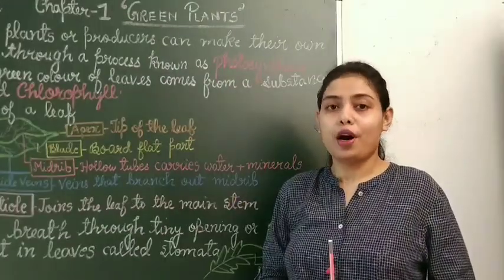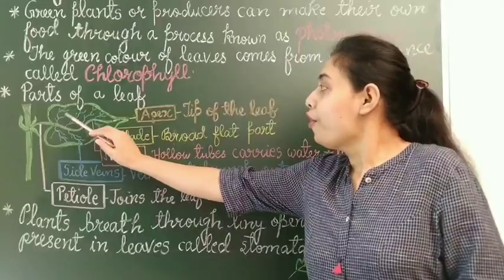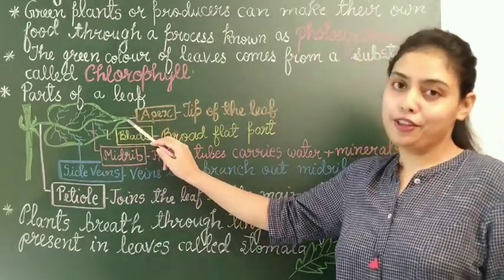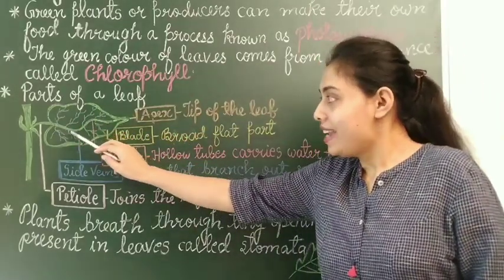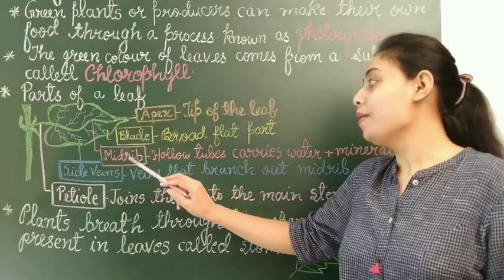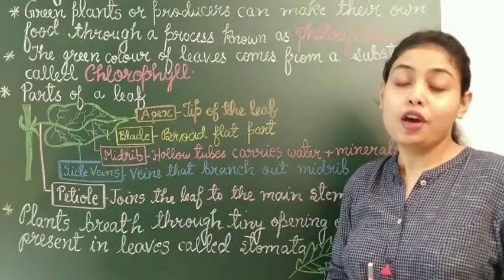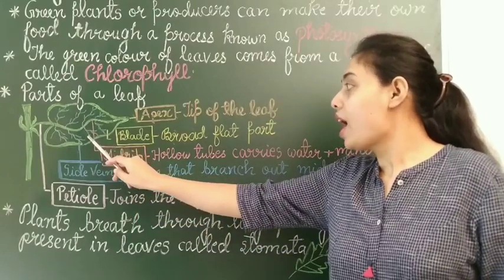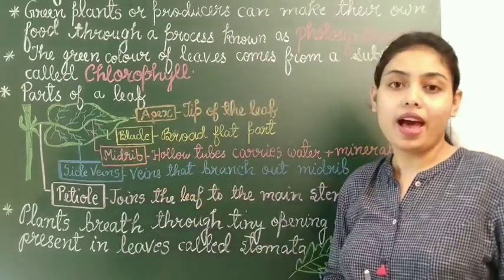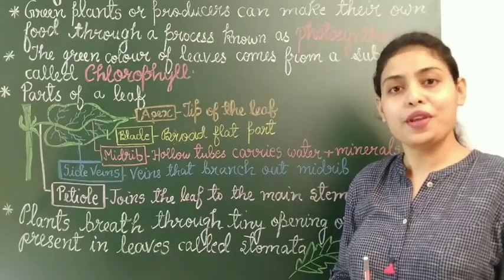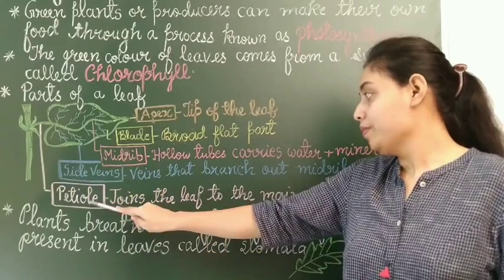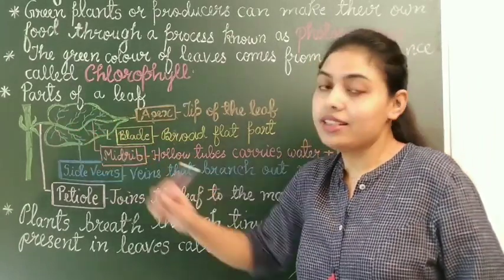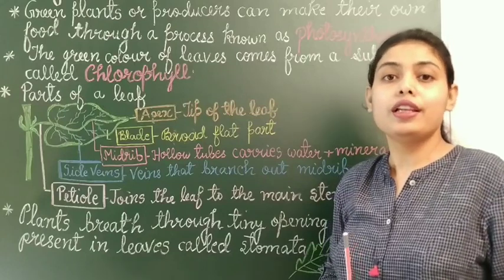Now we will study about different parts of a leaf. The broad, flat part of a leaf is known as the blade. The tip of a leaf is called the apex. The tube which runs at the center of a leaf is called the midrib — it is made up of hollow tubes which carry water and minerals. The veins which branch out from the midrib are known as side veins, and they also carry water and minerals. The petiole joins the leaf to the main stem.